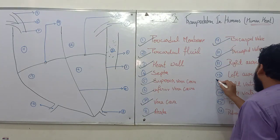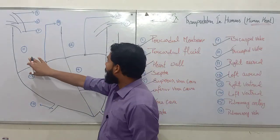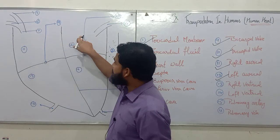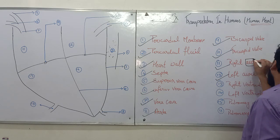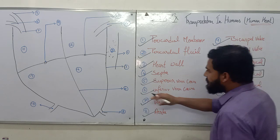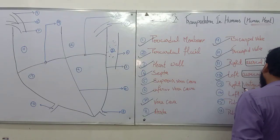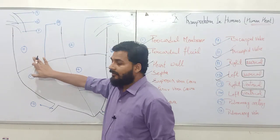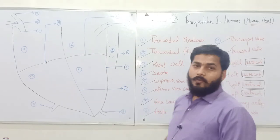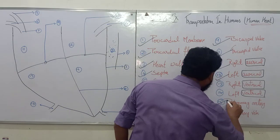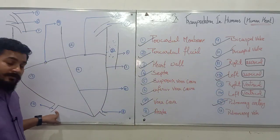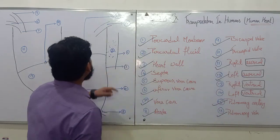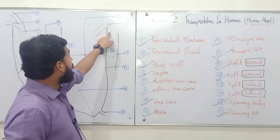The upper two chambers are known as auricles — the right auricle and left auricle — labeled numbers eleven and twelve. The lower two chambers, numbers thirteen and fourteen, are known as ventricles — the right ventricle and left ventricle. Then is the pulmonary artery, which is an exit from the right ventricle. And then the pulmonary vein, which is the entry to the left auricle.